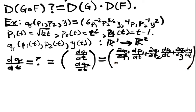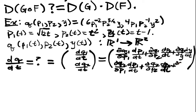What's my second component? Same game. I'm just applying the chain rule that I already know, the chain rule that I've already derived. (∂q2/∂p1)(dp1/dt) plus (∂q2/∂p2)(dp2/dt) plus (∂q2/∂y)(dy/dt).